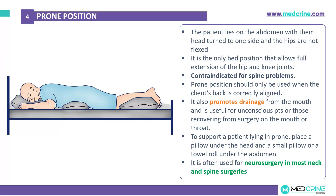To support a patient lying in prone position, place a pillow under the head and a small pillow or towel roll under the abdomen. Prone position is commonly used in patients undergoing neurosurgery and neck and spine surgeries.